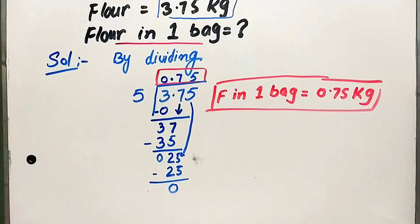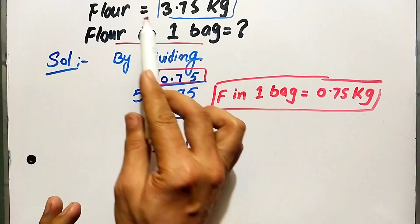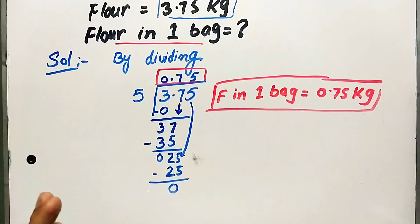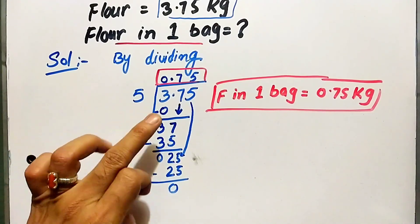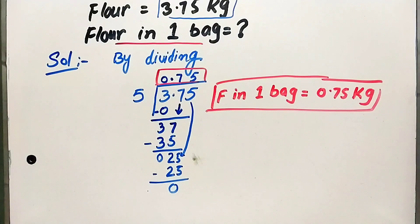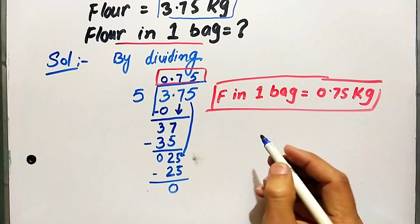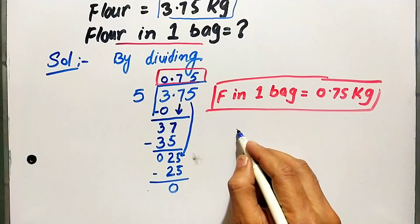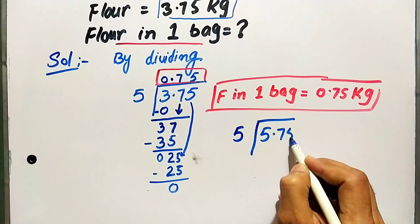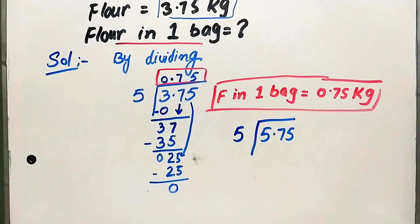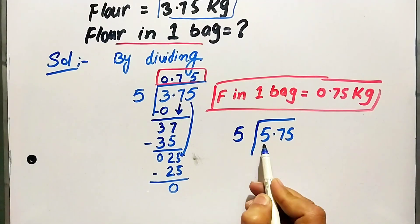Each bag will contain 0.75 kg of flour. Because in the 5th class the details are clear — the number of bags is given, and you find the amount of flour in one bag. The point is clear: divisor and dividend. Let's go to the next question.